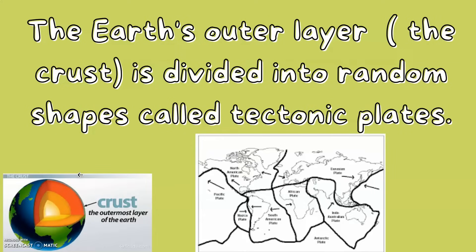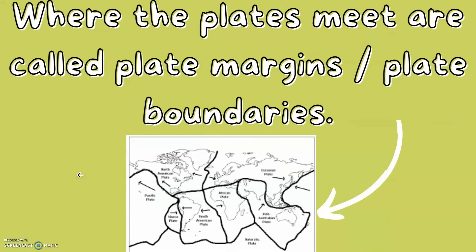Well, the Earth's outer layer, the crust, is divided into random jagged shapes called tectonic plates. You can see this in the diagram below. Where the plates meet are called plate margins or plate boundaries. This is shown by the black line in the diagram below.